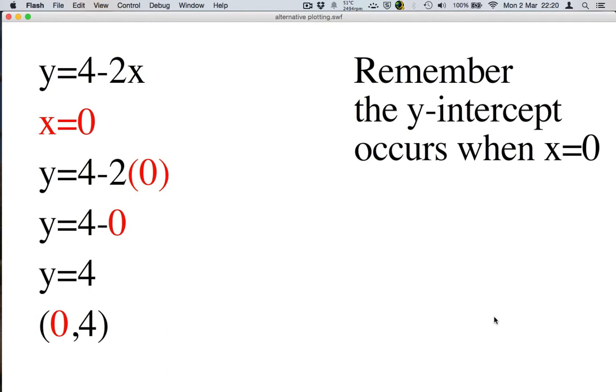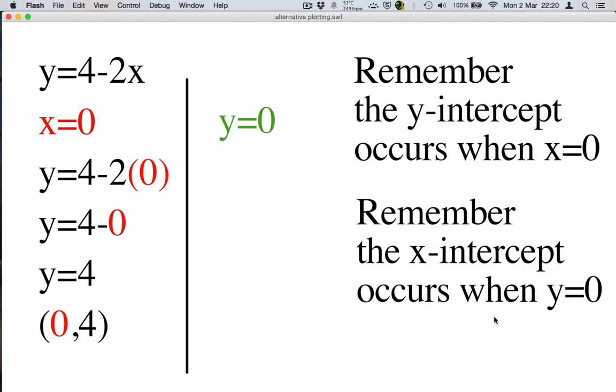Now let's find where the x-intercept occurs and that's when y equals 0. So let's put y into our formula. 0 equals 4 minus 2x. 2x equals 4 and so x equals 2. That gives us the point (2,0).